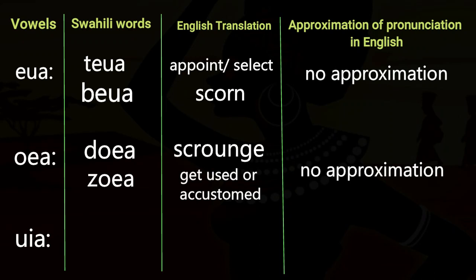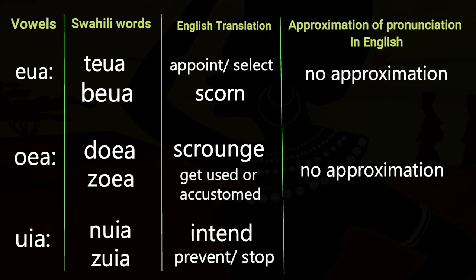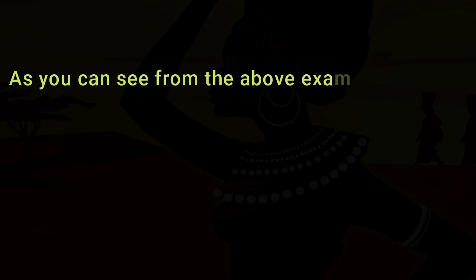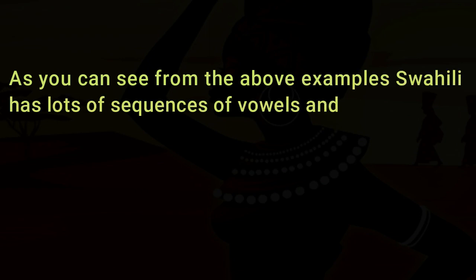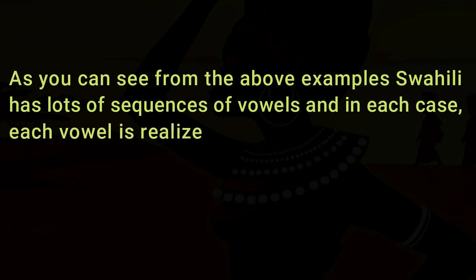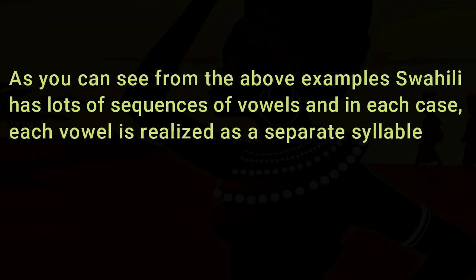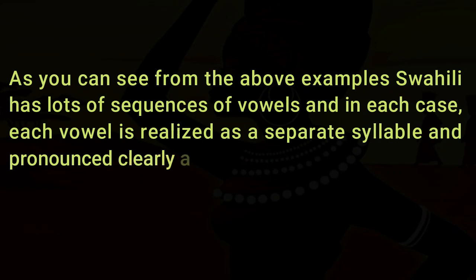For three-vowel sequences: IUA — 'teua' meaning Appoint or select, 'beua' meaning Scorn. UAI — 'zoea' meaning Get used to or accustomed. And UA — 'nuia' meaning Intend, 'zuia' meaning Prevent or stop. As you can see, Swahili has many vowel sequences, and in each case, each vowel is realized as a separate syllable and pronounced clearly and distinctly.